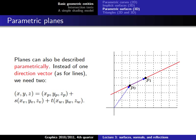Parametric planes are a generalization of the parametric line representation to 3D. Just as a 2D line has a position and a direction vector, a plane has a position and an orientation in 3D space. But to specify the orientation of a plane we need two vectors instead of one, since a plane extends in two independent directions.